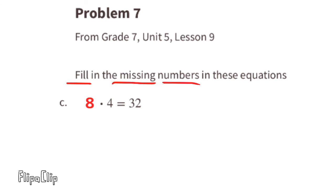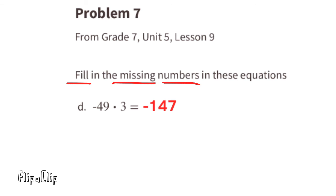Part D: negative 49 divided by 3 equals what number? Actually, it's negative 49 times 3 — a negative times a positive — so the answer is negative. And 49 times 3 is 147, so the answer is negative 147.